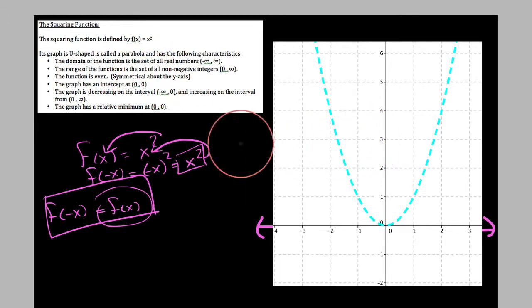As far as intercepts go, it has just one intercept, an x and a y-intercept that occurs at zero, zero.